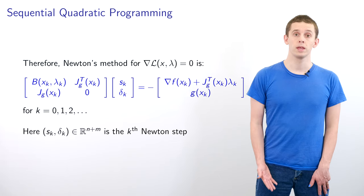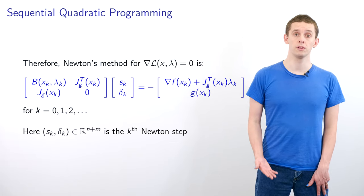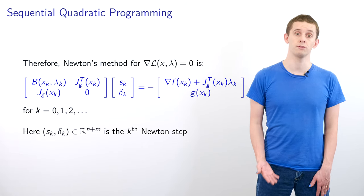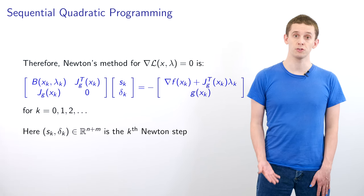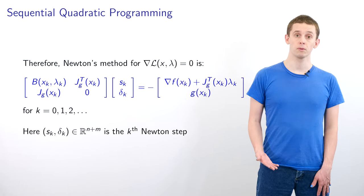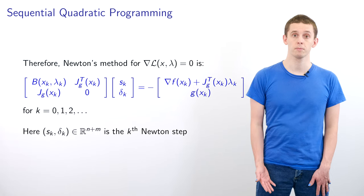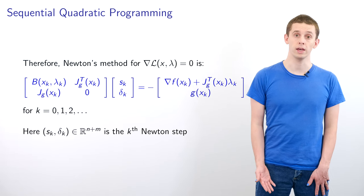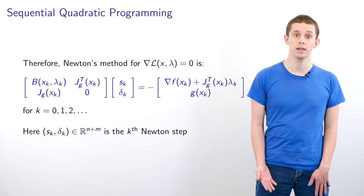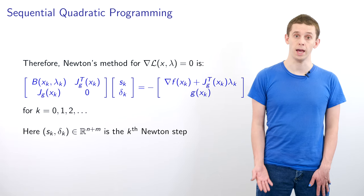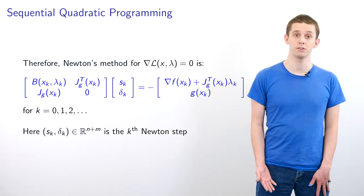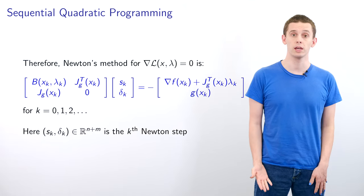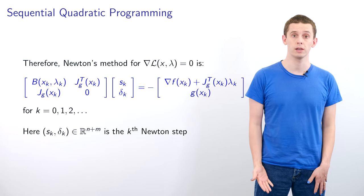Therefore, if we apply Newton's method to solve ∇L = 0, then we'll end up with steps with the following form. We'll have our square matrix for the Jacobian of the gradient of L. We'll then have a step that is broken out into two components, s_k of dimension n and δ_k of dimension m. On the right hand side we'll have minus the gradient of L. Once we've found s_k and δ_k, we can use those to update x_k and λ_k respectively.